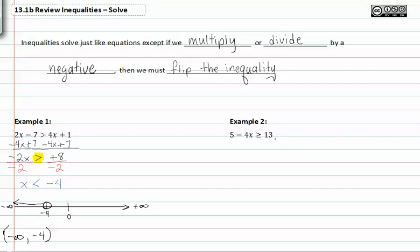Moving on to example two, let's go ahead and first subtract five from both sides. We get negative four x is greater than or equal to eight. Divide by negative four. That means we're going to have to flip our inequality over, and we're going to have x is less than or equal to negative two.